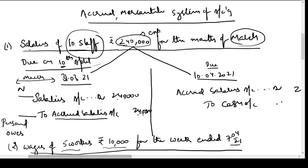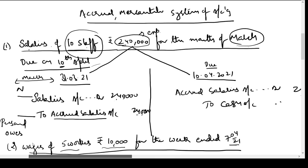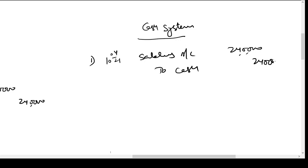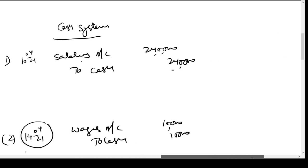Now, suppose we were recording transactions on the basis of cash system of accounting. Under cash system of accounting, an expense is recognized only on the day when cash is paid. So for the salaries due for March paid on 10th April, under cash basis the expense is booked only on 10th April: Salaries Expense Account — Debit; Cash Account — Credit 2,40,000. Instead of recording the expense in the period services were received, we record it in the period cash is paid. Similarly, for the wages example, the entry is booked only on 14th April — Wages Account Debit 10,000; Cash Account Credit 10,000 — recorded only on the date of payment.